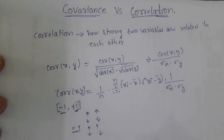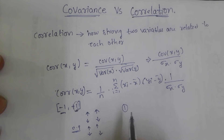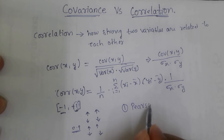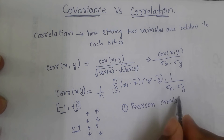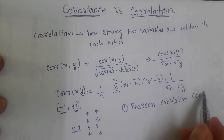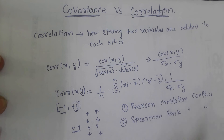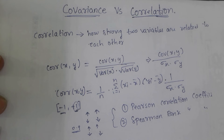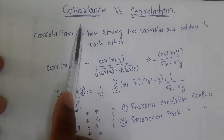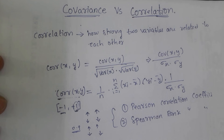Correlation has two main methods that we will discuss in detail. The first one is the Pearson correlation coefficient, and the second one is the Spearman rank correlation coefficient. We will discuss both in the next video. Covariance just tells us about positive or negative relationship — direct or inverse — but correlation tells us how strong and how close that relationship is.